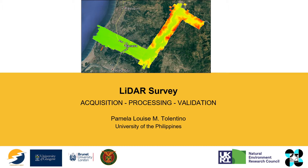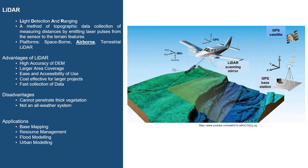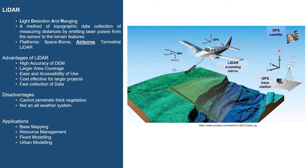The LiDAR survey has three components: acquisition, processing, and validation. LiDAR, or Light Detection and Ranging, is a method of gathering topographic points by emitting laser pulses and receiving them back in order to produce a model of terrain features. It includes three technologies: the LiDAR scanning mirror, which sends out the pulses to measure distance; the Global Positioning System (GPS), which gives the location of the equipment; and the Inertial Monitoring Unit, which measures the pitch, roll, and heading of the platform.